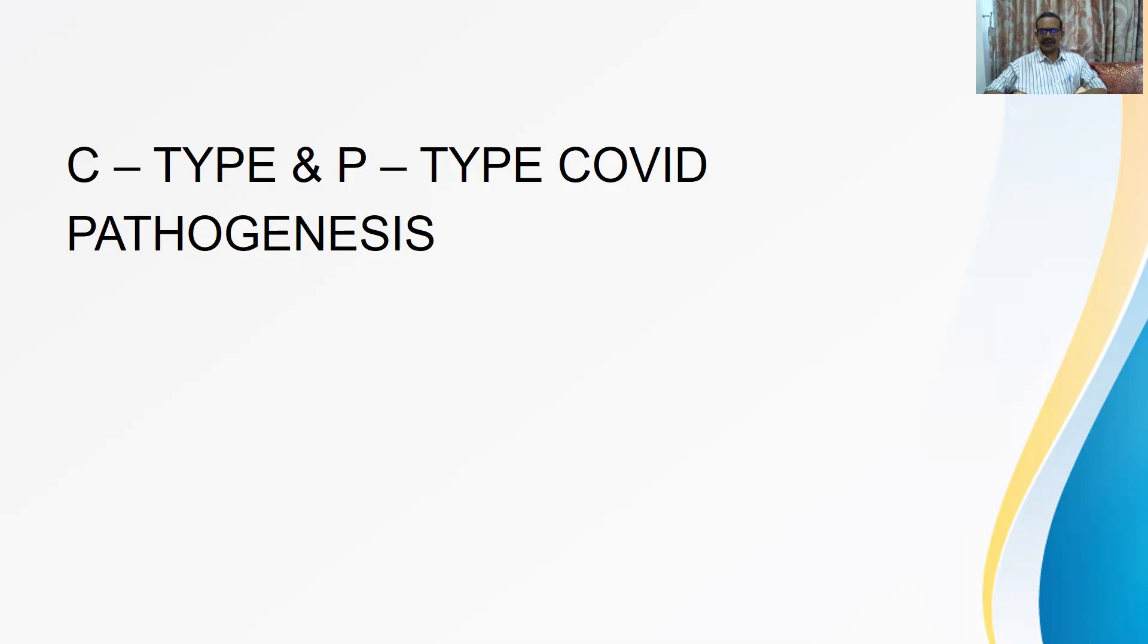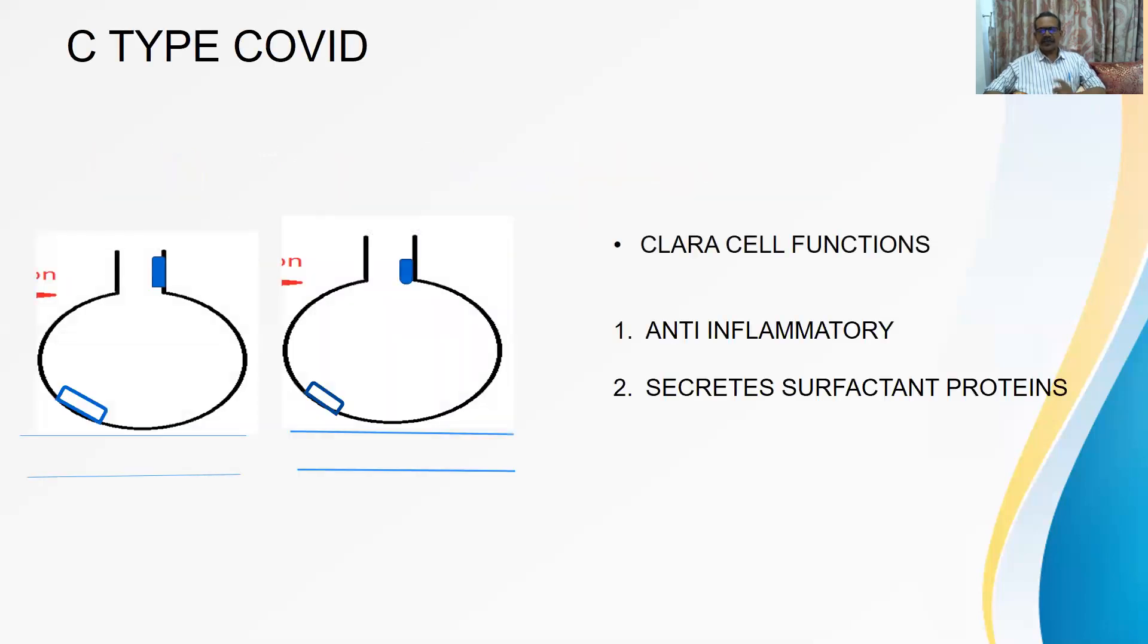Let us discuss first about C-type. We'll have hypothetical figures of two alveoli, one normal alveolus, one abnormal alveolus, and what happens in each type of corona. Both these alveoli are hypothetical. There are hypothetical airway compartments and hypothetical alveolar compartments. In this junction of bronchioles and alveolus, that is BAD, bronchiolo-alveolar duct junction, the CLARA cell is situated. This CLARA cell is quite normal functioning cell.